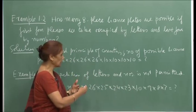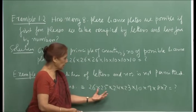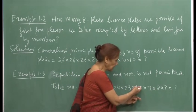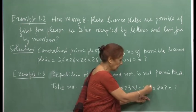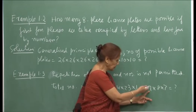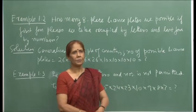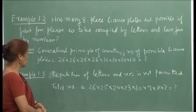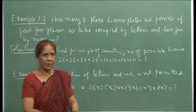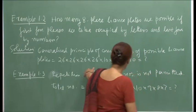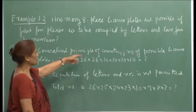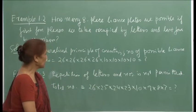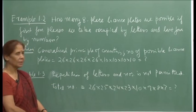Using the generalized principle of counting, the possible outcomes without repetition are 26 × 25 × 24 × 23 for the letters. Similarly, for the numbers: the first digit has 10 choices, then 9, then 8, then 7. The generalized principle of counting helps you find the possible number of outcomes of an experiment — here I had 8 experiments, one for each place of the license plate.